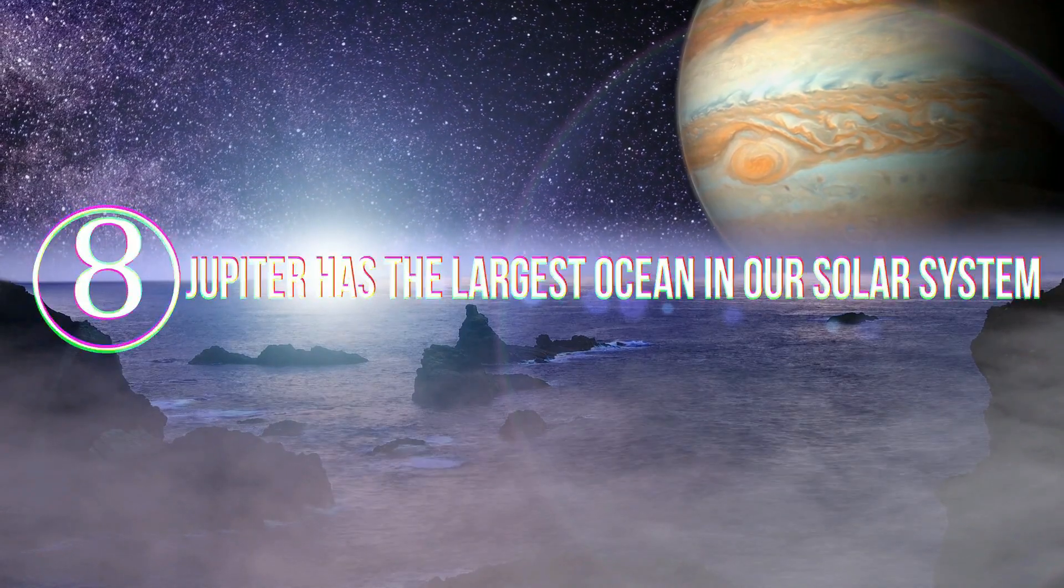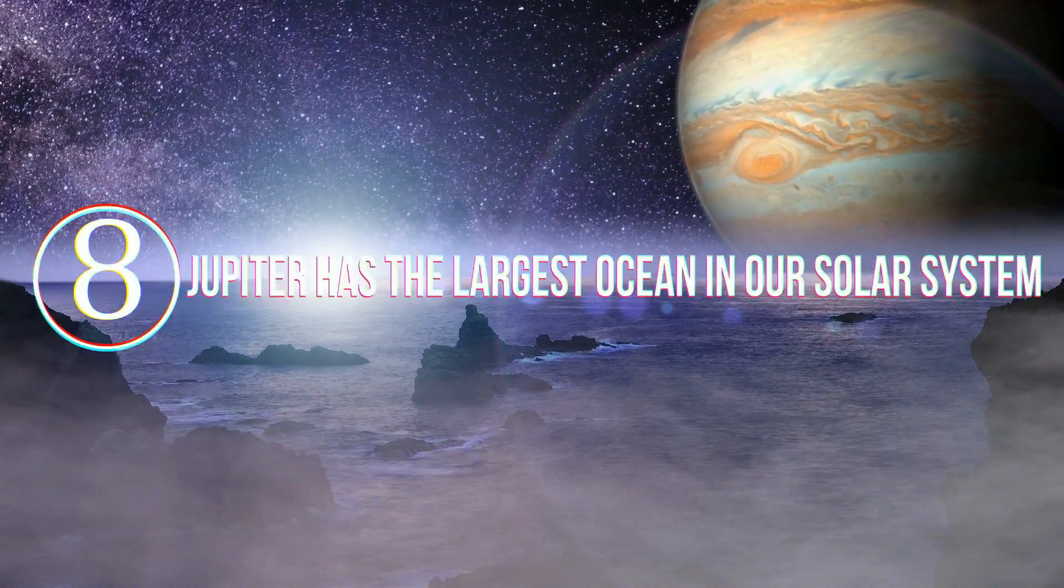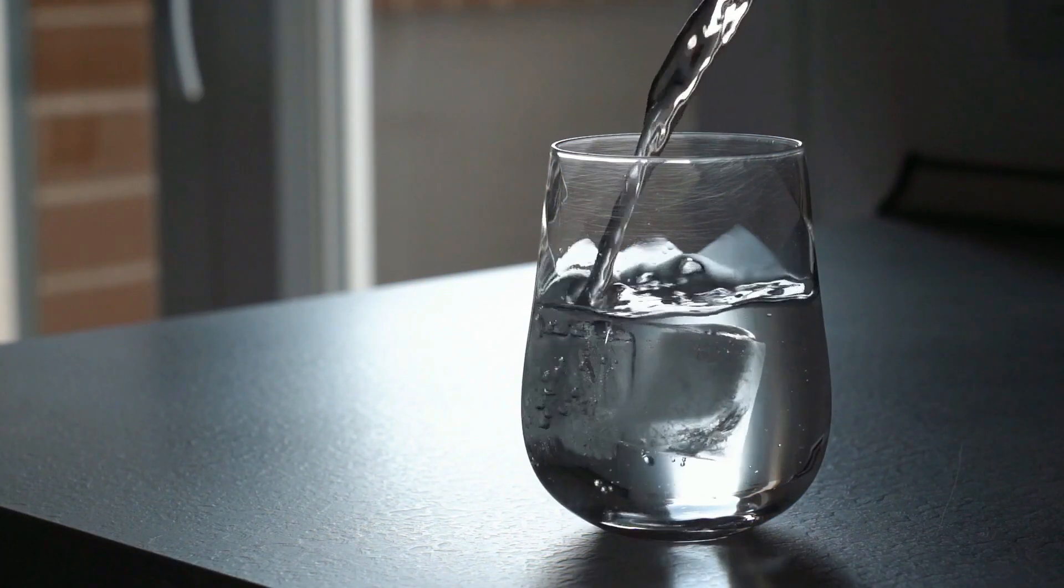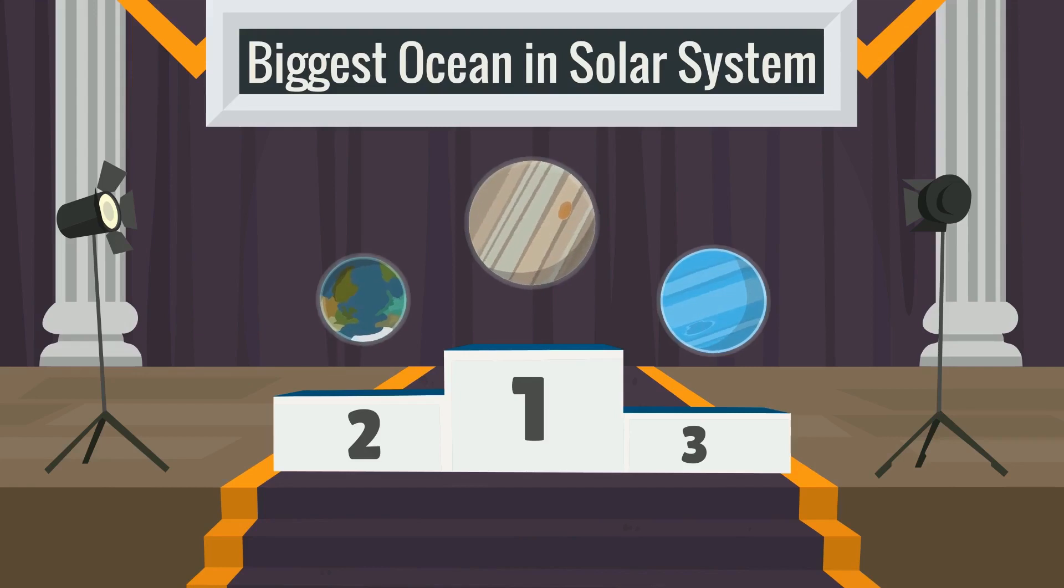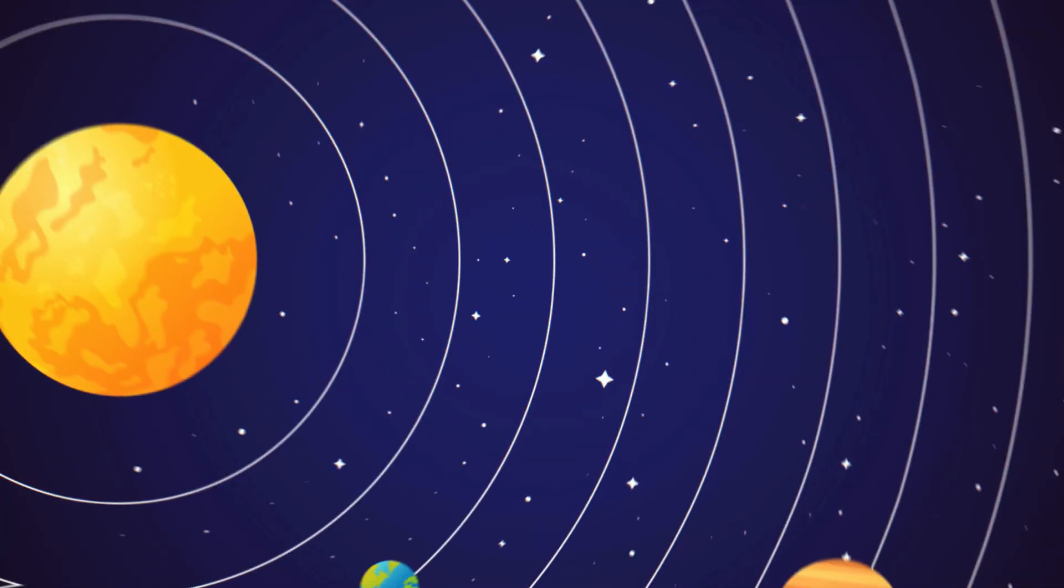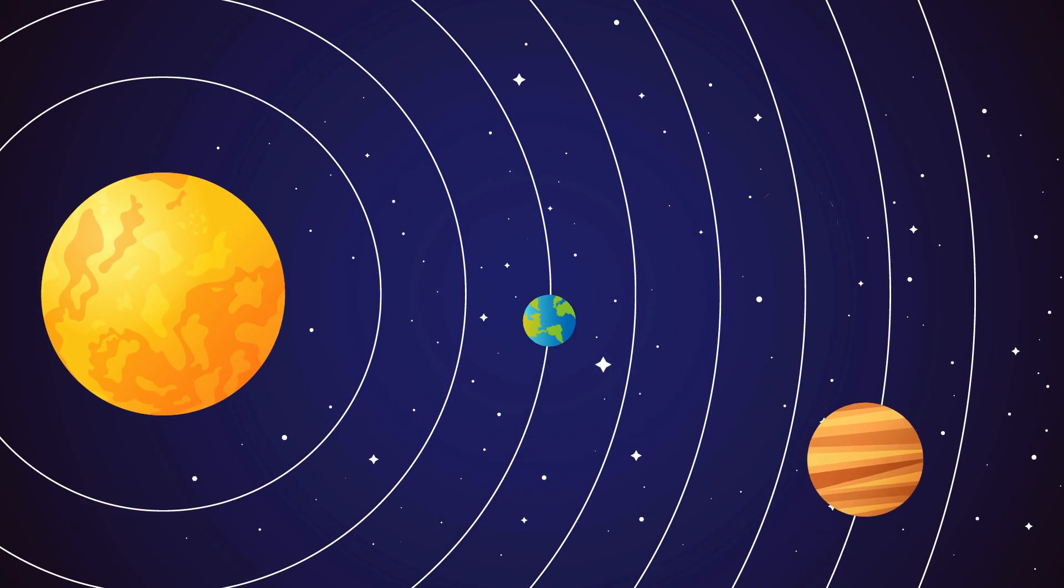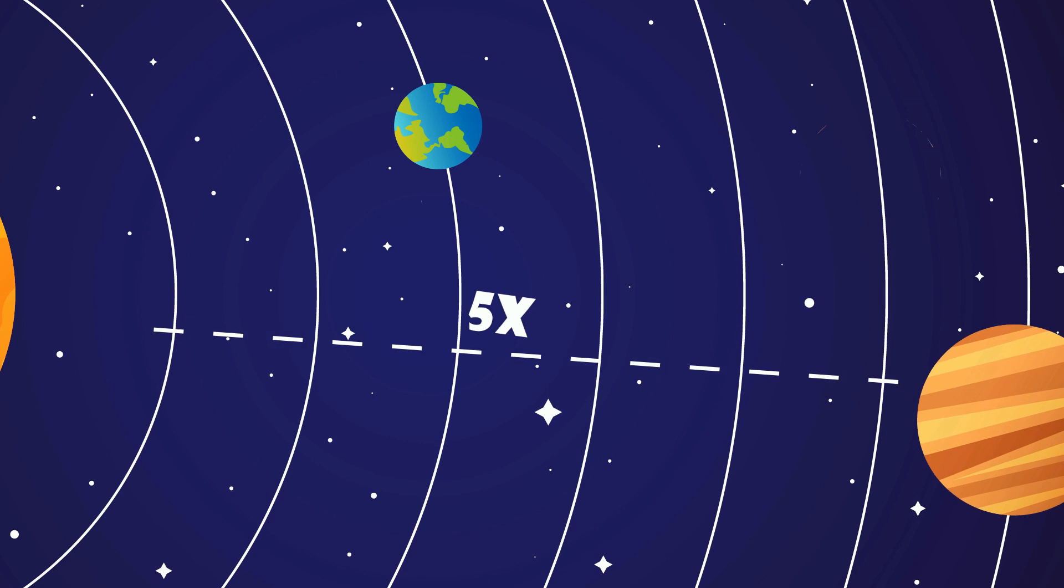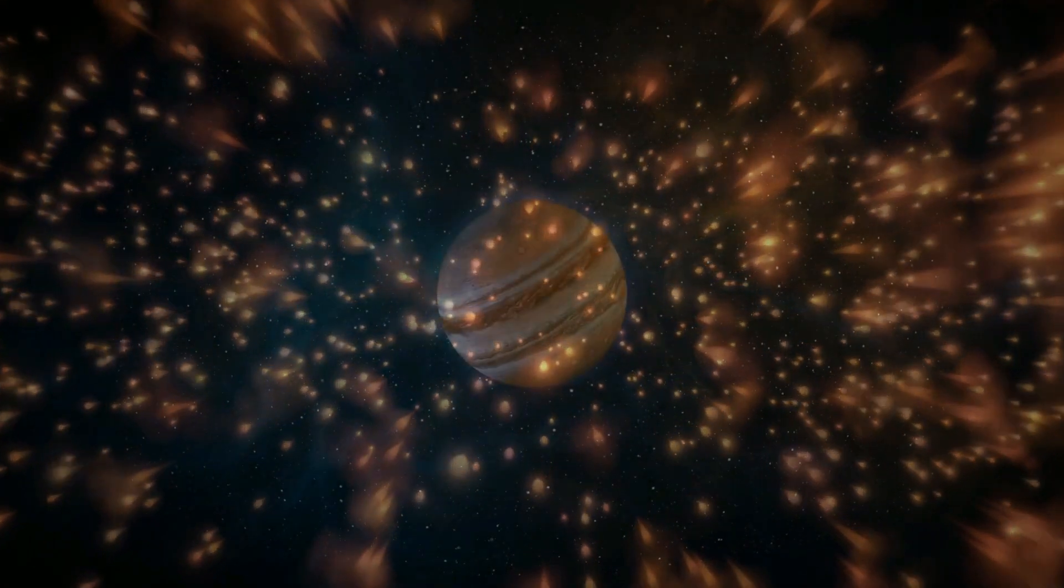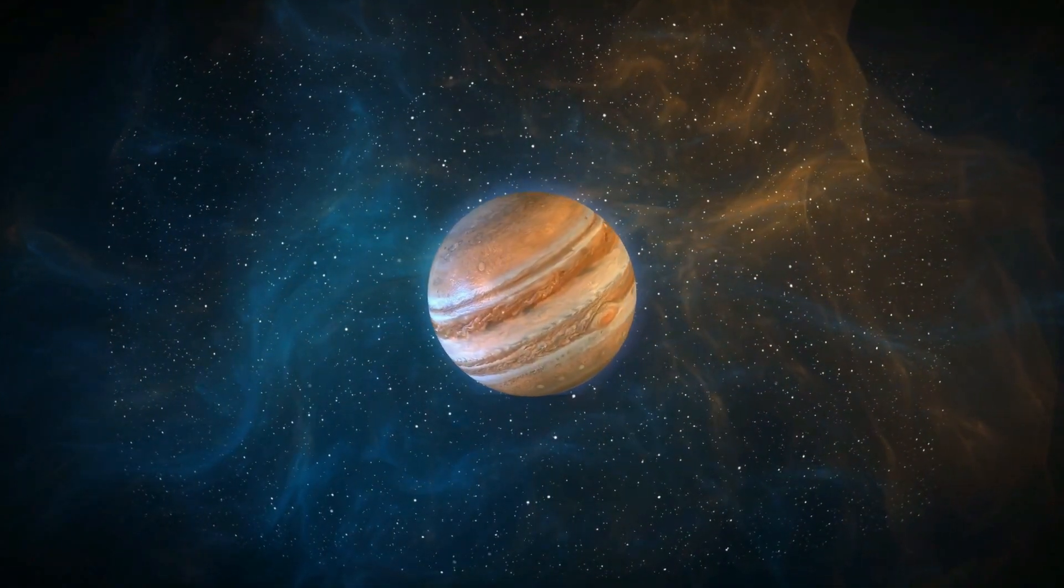Number 8. Jupiter has the largest ocean in our solar system. One of the main requirements of sustaining human life is water. So it might seem a bit strange that the biggest ocean is actually not on Earth. But the ocean is filled with metallic hydrogen. Jupiter orbits around in a very large area of space. It is five times further away from the Sun than the Earth. Due to this fact, Jupiter retained quite a lot more hydrogen and helium during the Big Bang. In fact, most of that planet is hydrogen and helium.